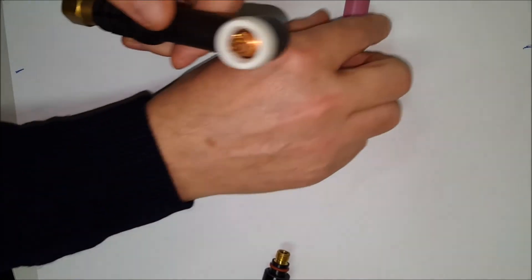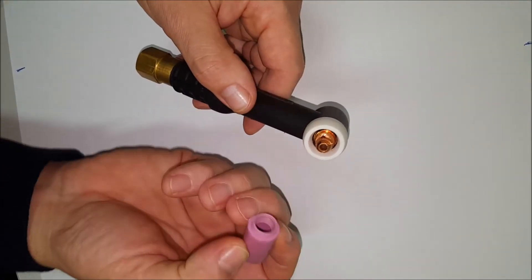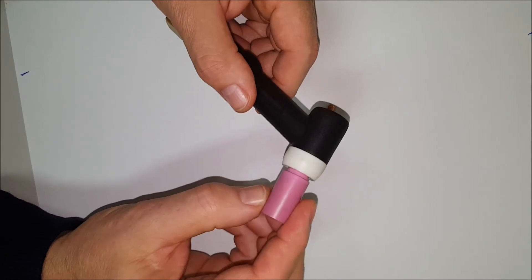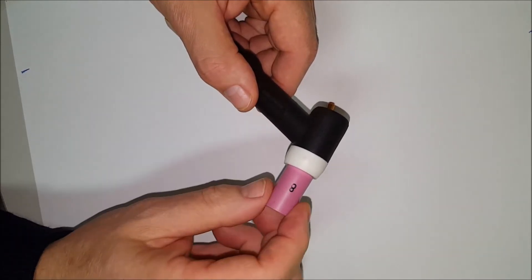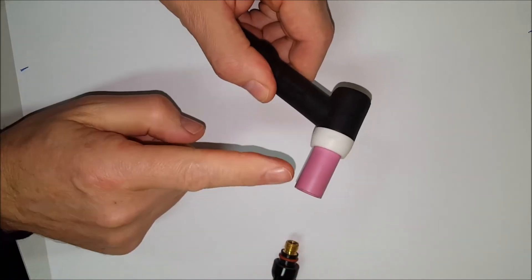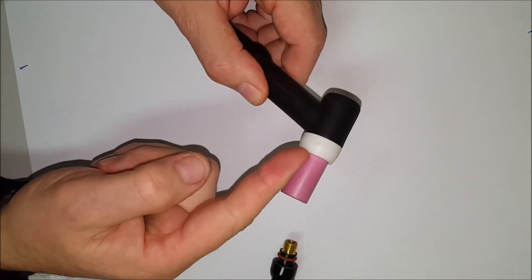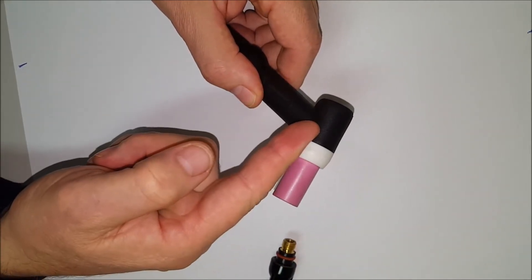Once we've done that, we can get the ceramic or gas cup and screw that onto the collet body. Don't ever try to do it the other way around because you'll find that the ceramic will stop the collet body from screwing all the way into the bottom of the torch.